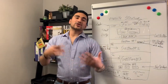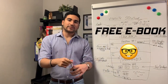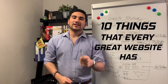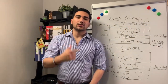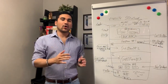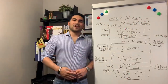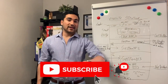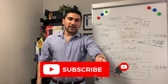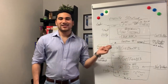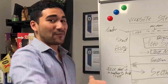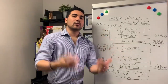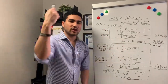You can also download my ebook — it's going to be linked in the description. It's called 'The 10 Things That Every Great Website Has.' It's going to change the way you see your website because your website is a sales machine. That's it for today. Subscribe, like, hit the bell button so you keep getting all this amazing content I bring every week, because I want you to create your own economy and dominate your competition.